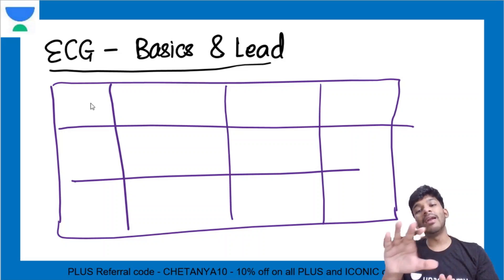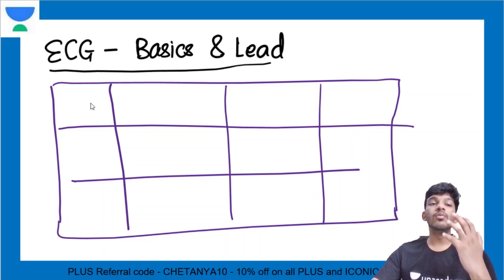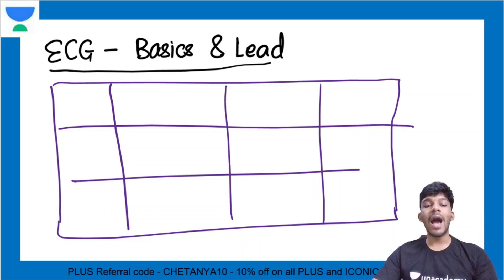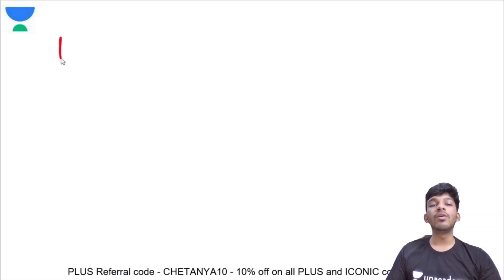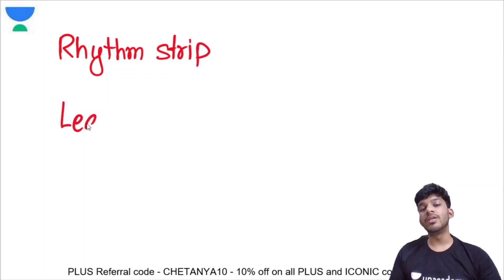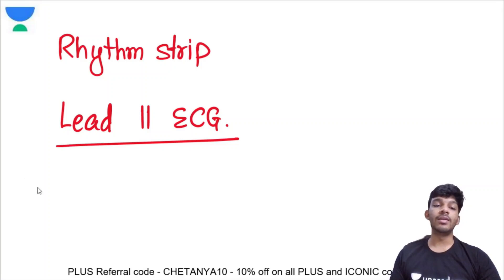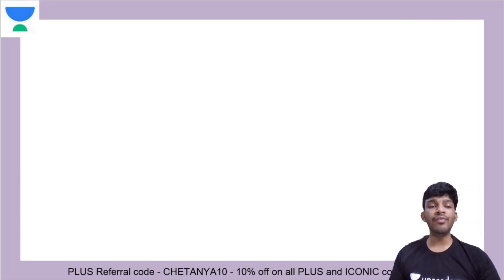So what we generally do in an ECG is at the base of an ECG, we generally have something called a rhythm strip. It is a continuous record from lead II ECG. That is the important thing to understand — it's usually taken from lead II, and it can help us monitor a few basic things.